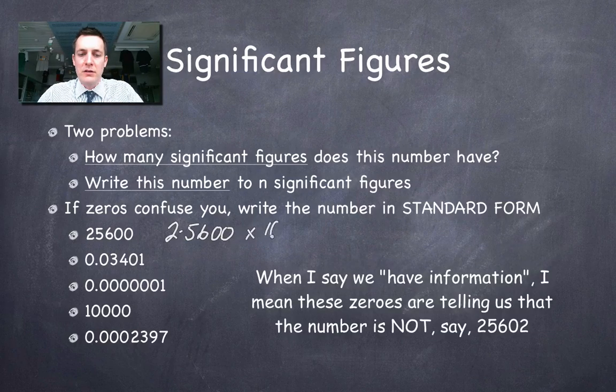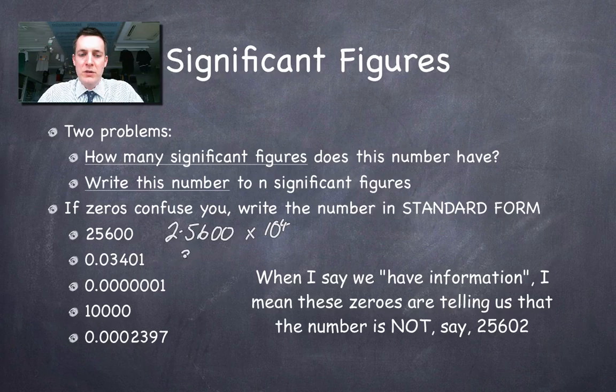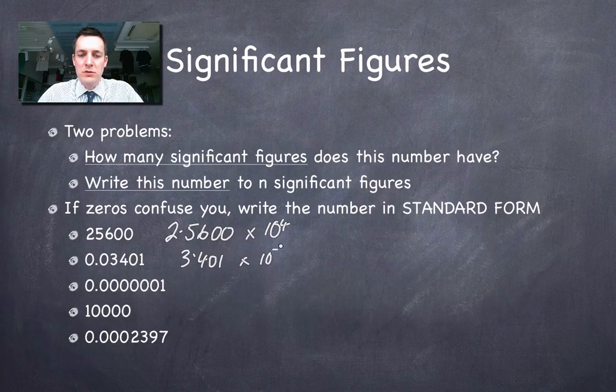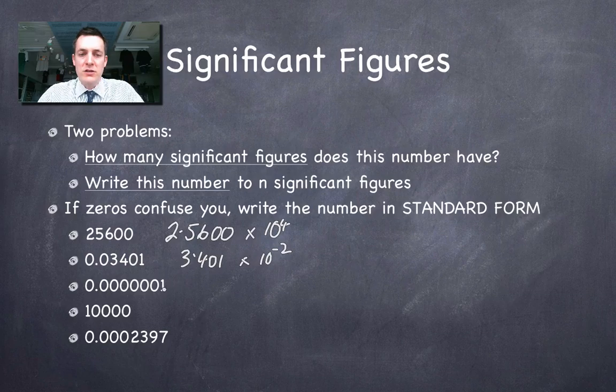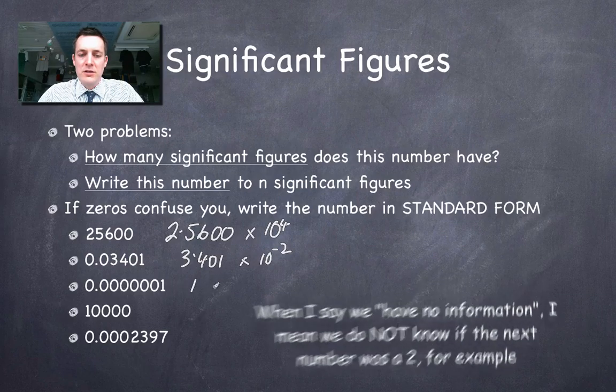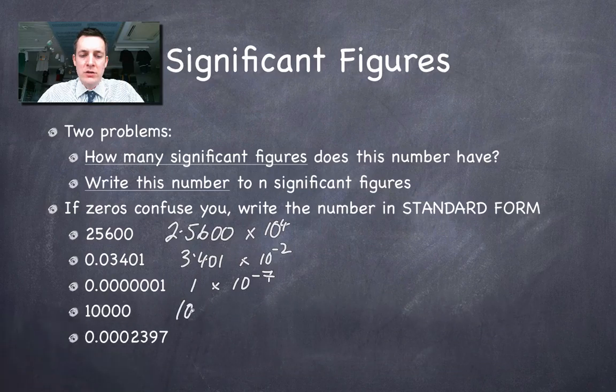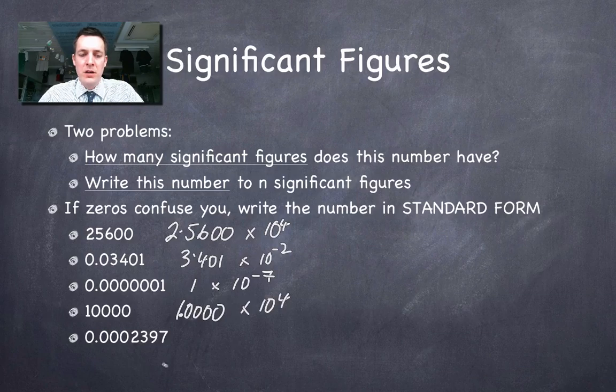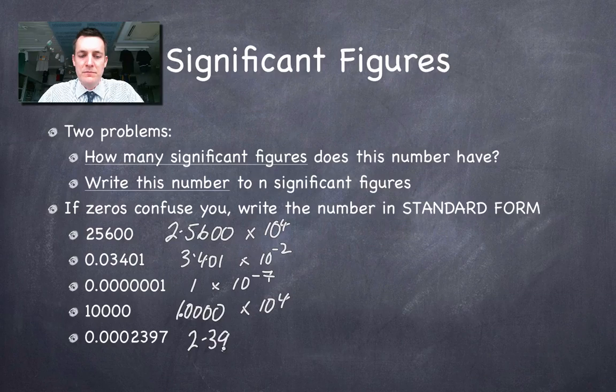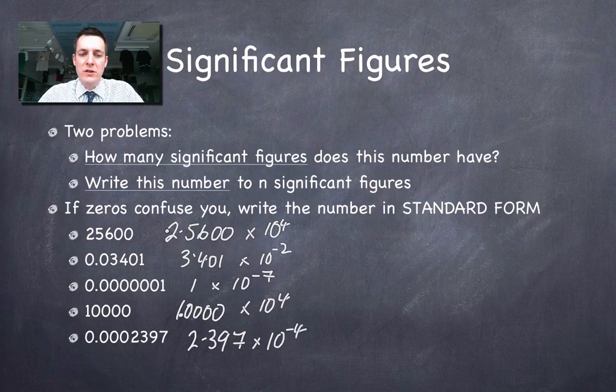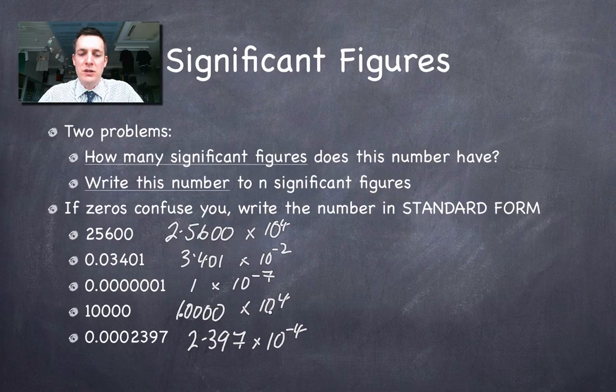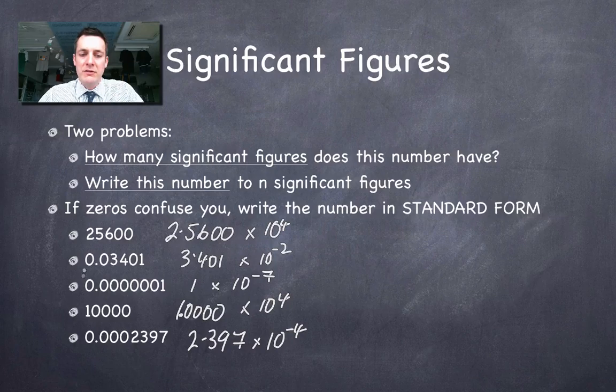I'd write this number here as 2.5600 because I've got information about this number here. So I'm going to write it all down and then I'm going to write that times 10 to the 4. This one here would be 3.401 times 10 to the minus 2. This one, the first non-zero digit is 1, and I've got no information after that, so the best I can do here is write that as 1 times 10 to the minus 7. Here I'd write 1.000 times 10 to the 4. And here I'd write 2.3971 times 10 to the minus 4. So in each of these examples, all I'm doing is I'm starting with the first non-zero digit and then I'm writing all the information that I've got after the decimal point and I'm multiplying by 10 to a certain power. Now to decide how many significant figures there are in these numbers, all I have to do is look at my standard form number and see how many numbers there are here before the 10 to the power of. So this one is 5 significant figures. This one's 4 significant figures. This one's 1 significant figure. This one's 5 significant figures. And this one's 4.